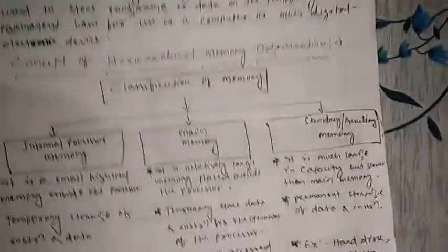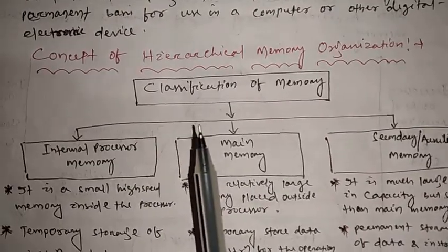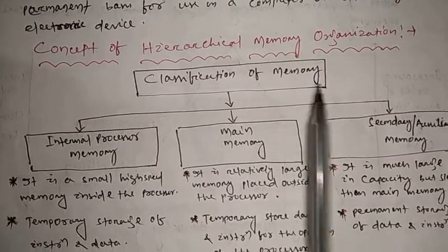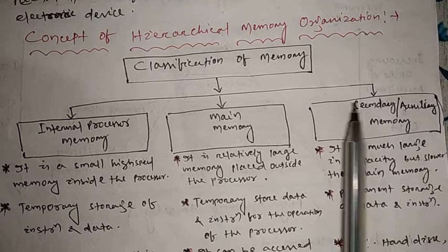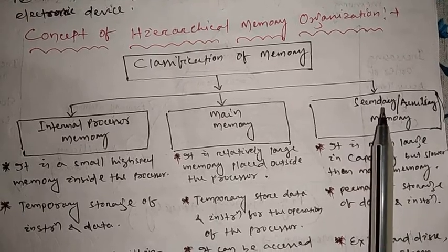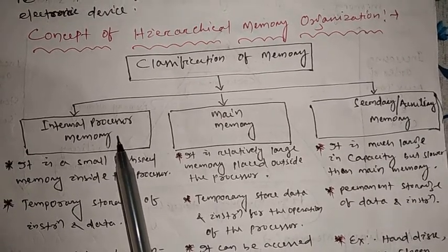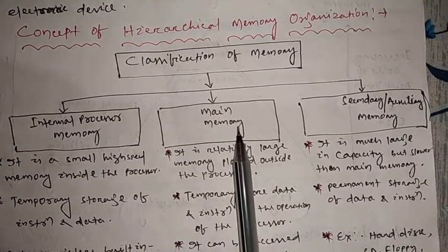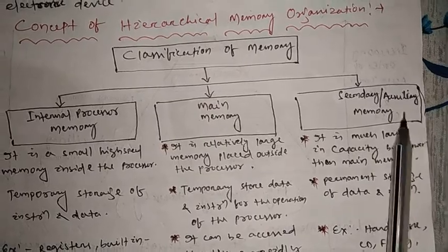Next, we will discuss the concept of hierarchical memory. Coming to classification of memory — there are three classifications in computer memory: one is internal processor memory, main memory, and secondary or auxiliary memory.